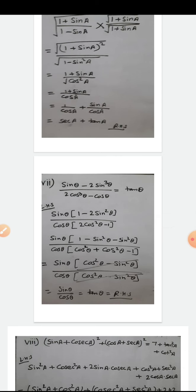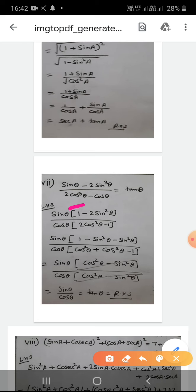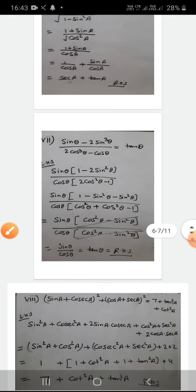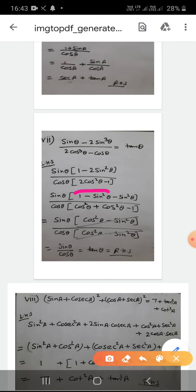Part 7: prove (sin θ - 2sin³θ) / (2cos³θ - cos θ) = tan θ. Taking the LHS, I factor the numerator and denominator. From the numerator I take sin θ common, leaving (1 - 2sin²θ). From the denominator I take cos θ common, leaving (2cos²θ - 1). Then I rewrite: 1 - 2sin²θ = 1 - sin²θ - sin²θ = cos²θ - sin²θ, and 2cos²θ - 1 = cos²θ + cos²θ - 1 = cos²θ - sin²θ.